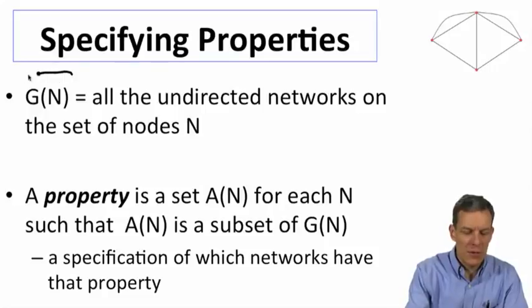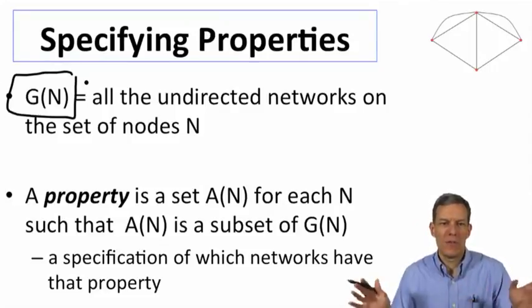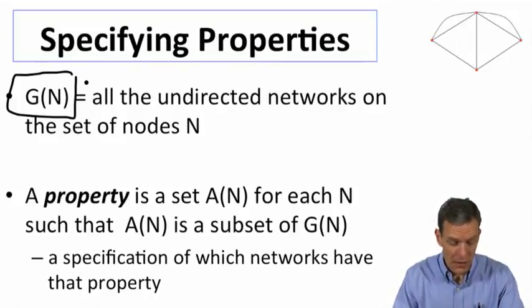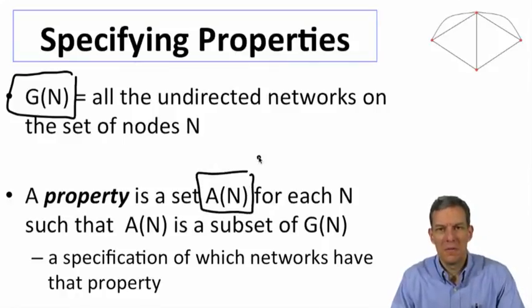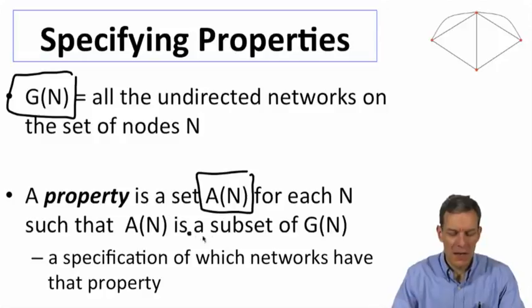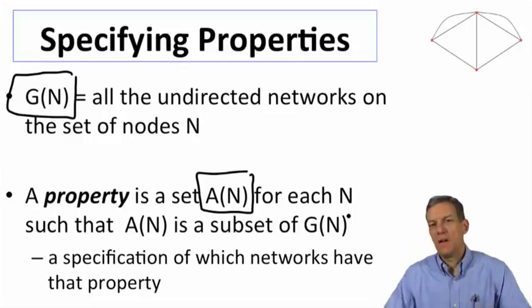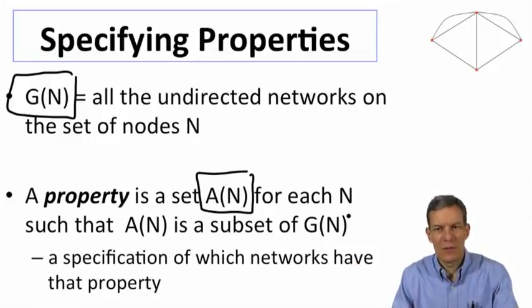So let's let G(N) denote all the possible networks that could be put on a set N of nodes. All undirected. So we'll just have these be 0, 1 relationships either there or not. And no direction to it, no weights. And then a property is just going to be a subset of networks. So A(N) is a subset of G(N). It just specifies, here's the networks that have the property. The ones not in A(N) don't have the property.